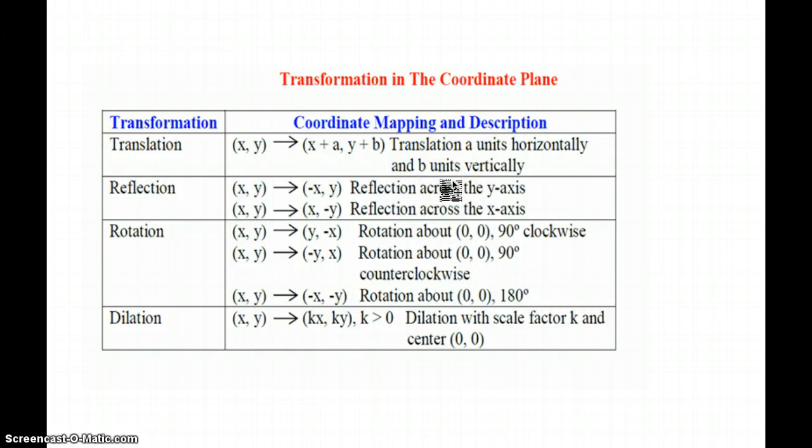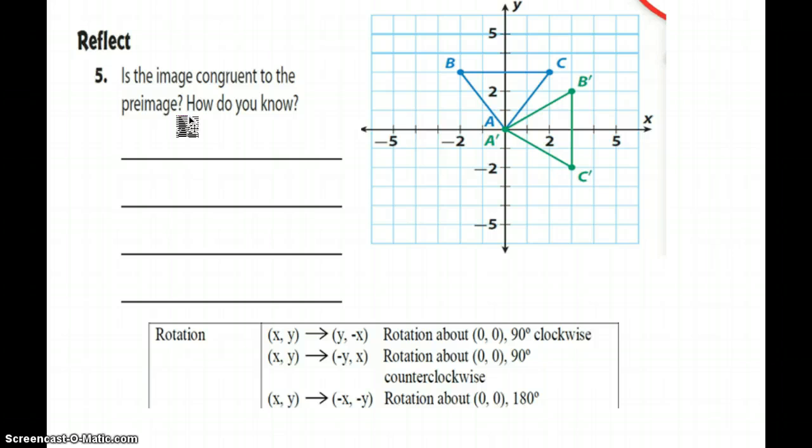Just to tease you a little bit, I put these up here to make sure that you understand the importance of this actual coordinate mapping and description as far as these transformations. So please, please record them. Now here it gives us an actual transformation and it says is the image congruent to the preimage? So here is the image, here is the preimage, or should I say blue is the preimage and green is the image. How are they congruent and how do you know? So go ahead and stop it and take a look at that and see if you can come up with that.